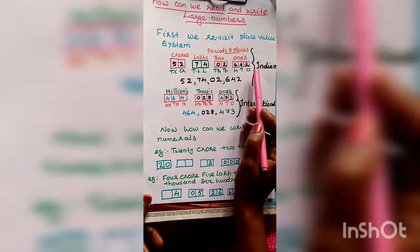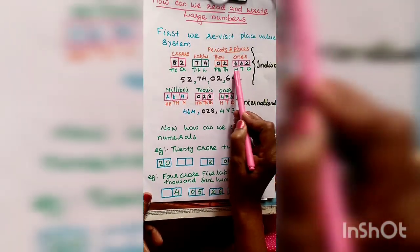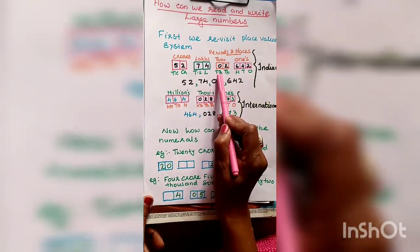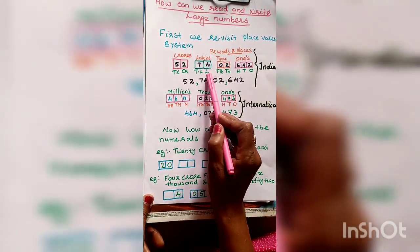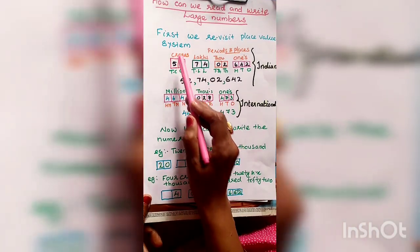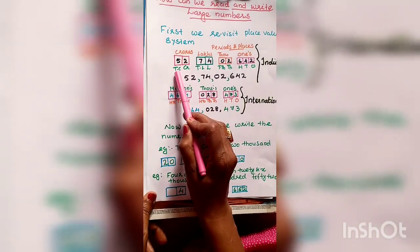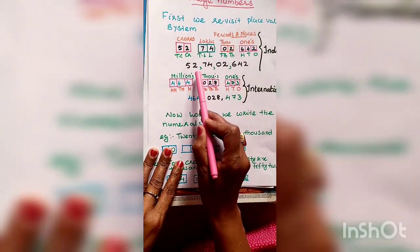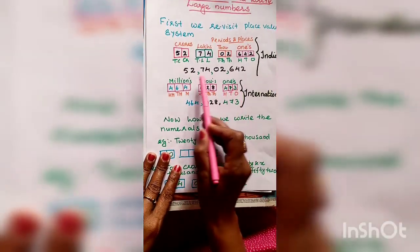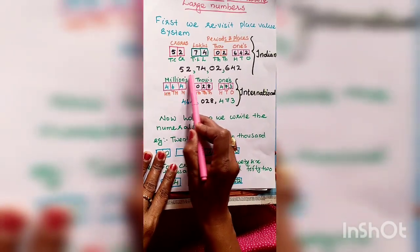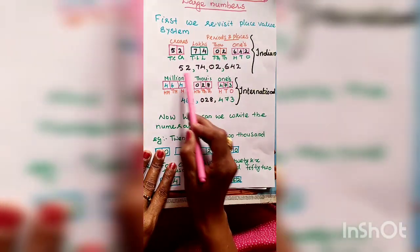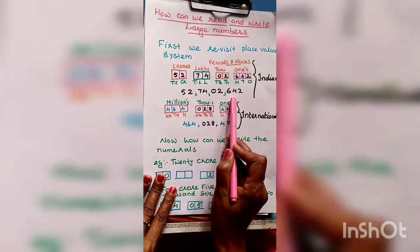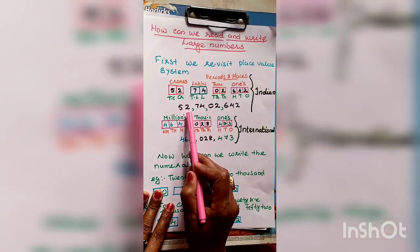The ones period has places: 1, 10, 100. The thousands period has 1,000 and 10,000. The lakhs period has lakh and 10 lakhs. The crores period has crore and 10 crore. How can we read a number using the place value system? I have given a number here, divided into periods using commas, and accordingly we can read the number.